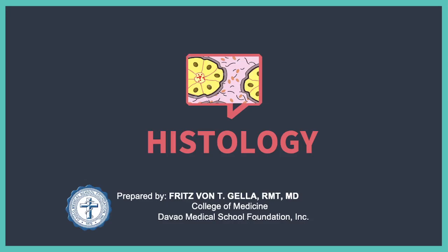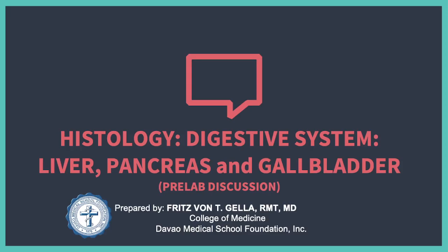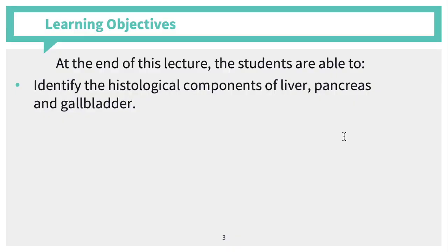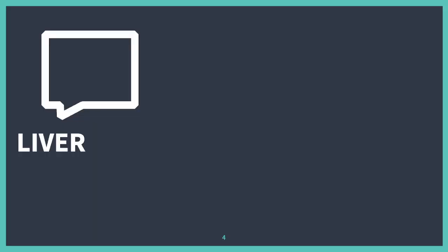Hi everyone, today this is Dr. Vaughn and for today we will be discussing Part 3 of your digestive system. This is just a continuation of what you had discussed with Dr. Lopez. This is a part of the different accessory glands to your digestive system, and this includes your liver, your pancreas, and your gallbladder.